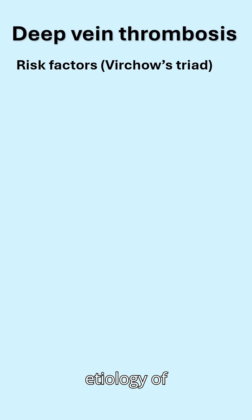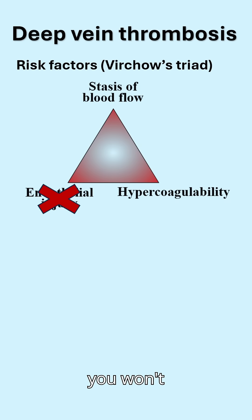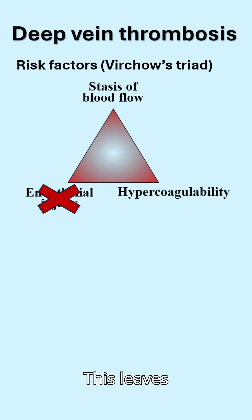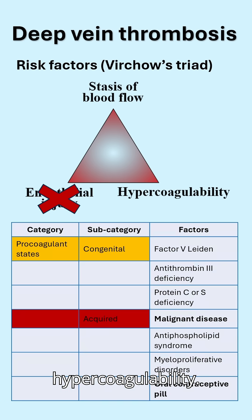The etiology of DVT can be identified using Virchow's triad. Here you won't consider endothelial injury, as it is not associated with a DVT. This leaves us with stasis of blood and hypercoagulability.